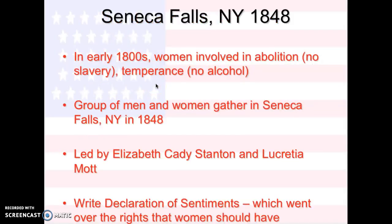So where does this movement start? In the early 1800s, women were involved in abolition, which means that they're against slavery. And they were also against alcohol, so they had movements for temperance that tried to limit the use of alcohol.